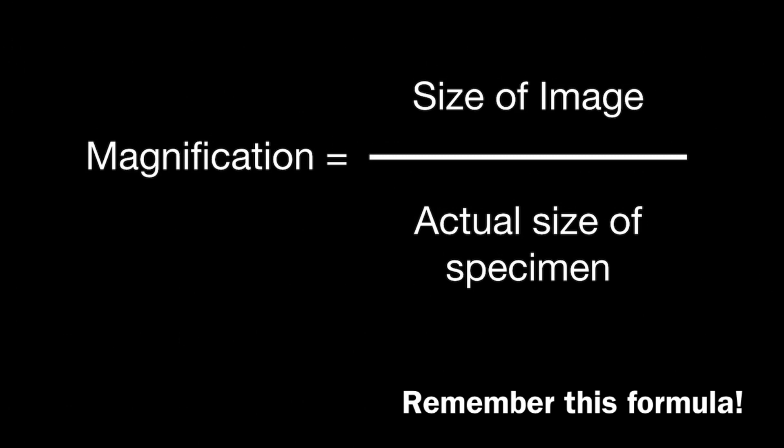When calculating magnification or actual size of cells or cell structures, there's a formula you need to use, and I would recommend that you memorize it. Magnification equals the size of the image — that is the size you measure with your ruler — divided by the actual size of the specimen, which I often describe as 'how small is it really.'